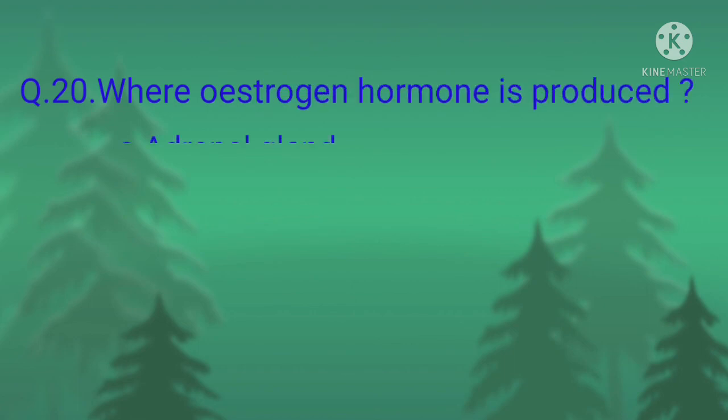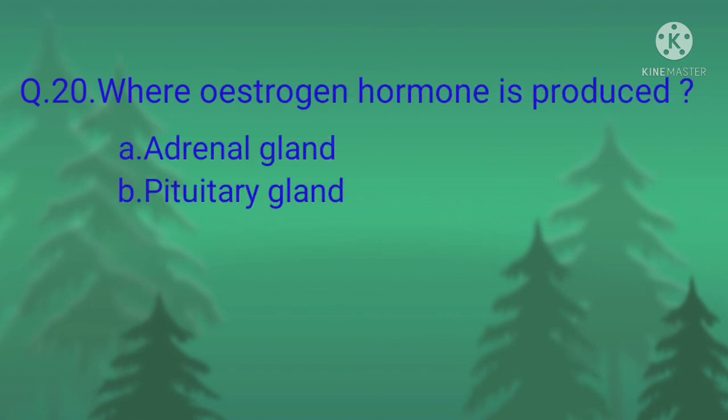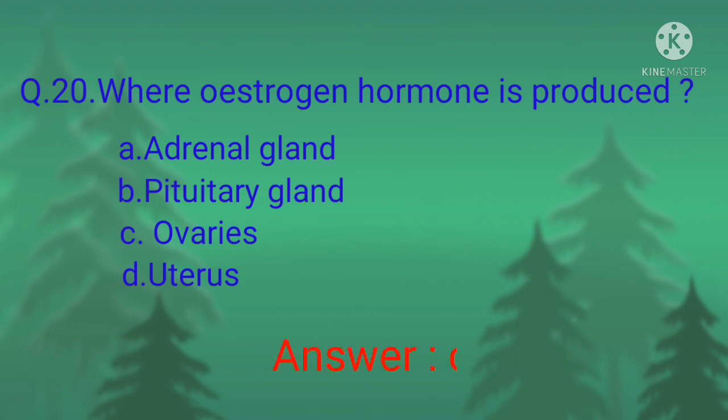Question number twenty: where are estrogen hormones produced? Option A, adrenal gland; option B, pituitary gland; option C, ovaries; option D, uterus. The correct option is option C, ovaries.